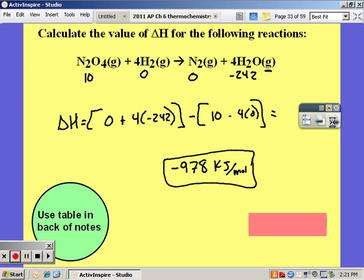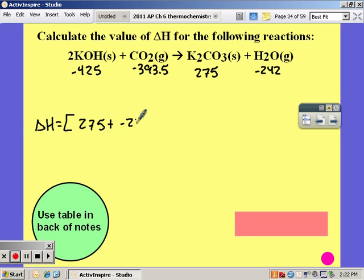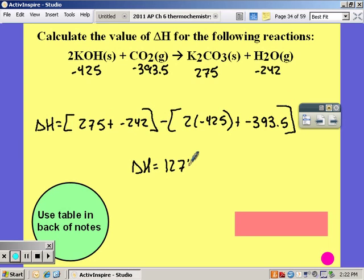Go ahead and try the next one on your own. Restart the video when you have it. You should have gotten negative 425, negative 393.5, 275, and negative 242 for your delta H of formations. Plugging those in, you have 275 plus negative 242, all of that minus 2 times negative 425 plus negative 393.5, which gives you a delta H of reaction of 1276.5 kilojoules per mole.